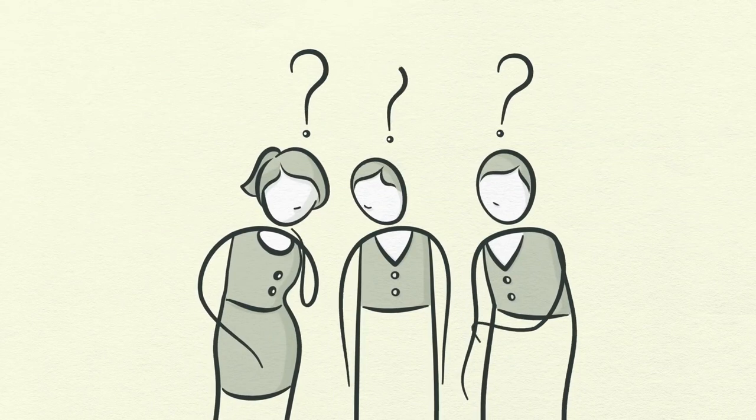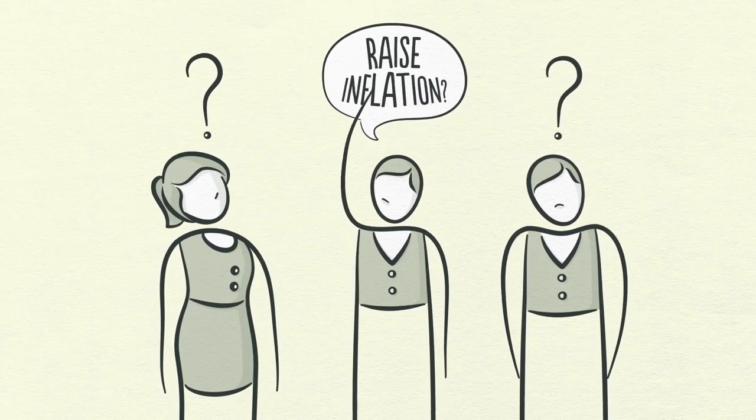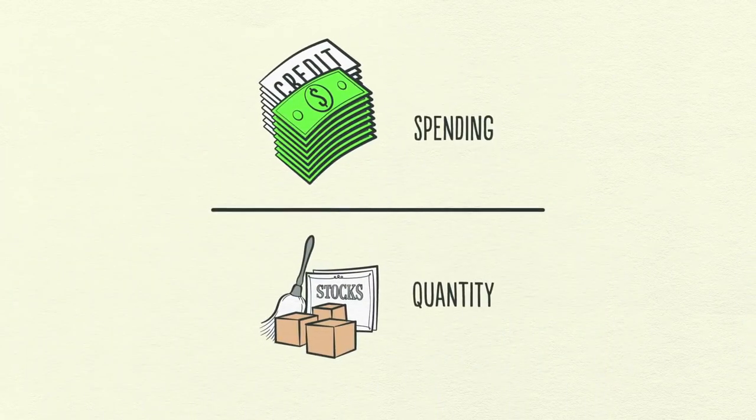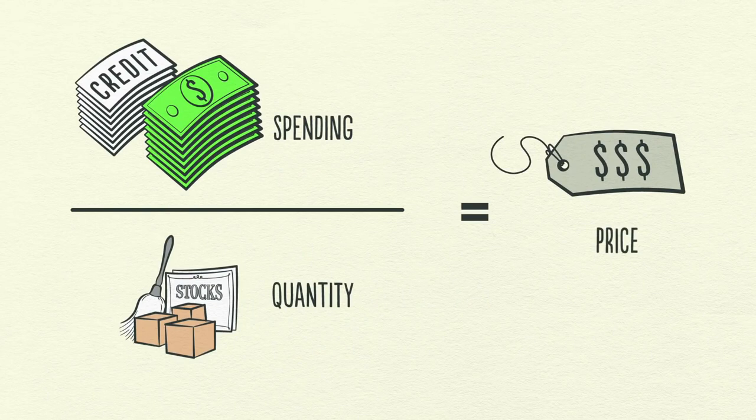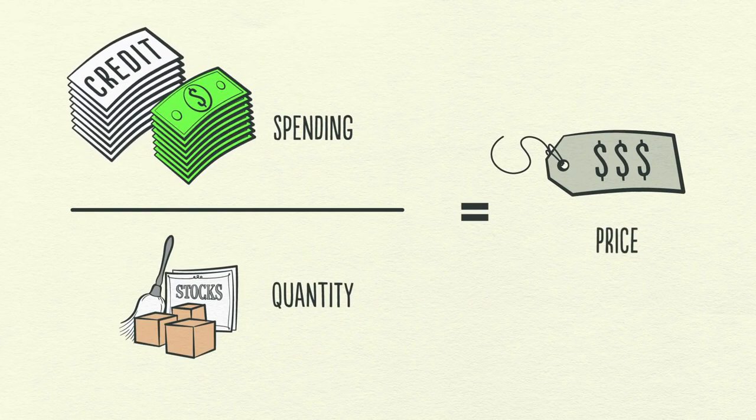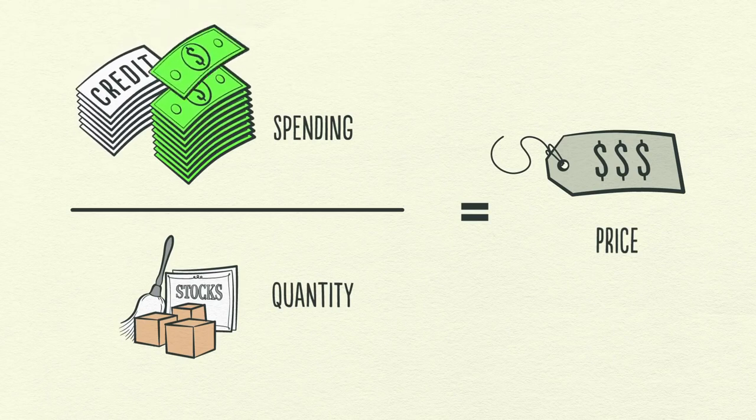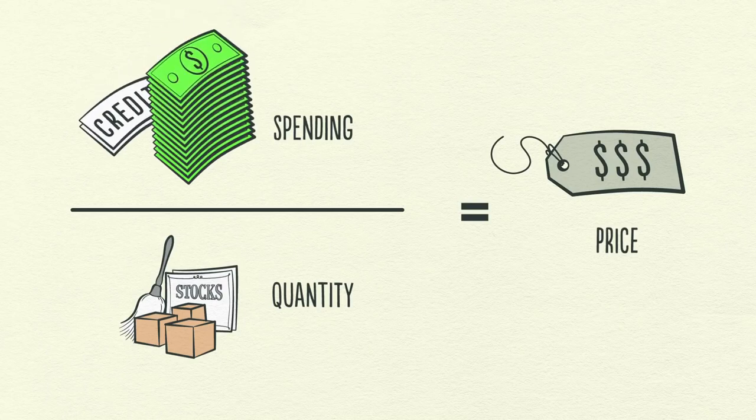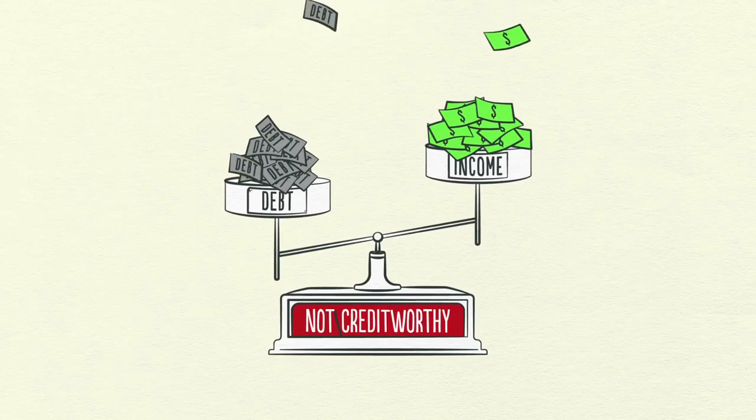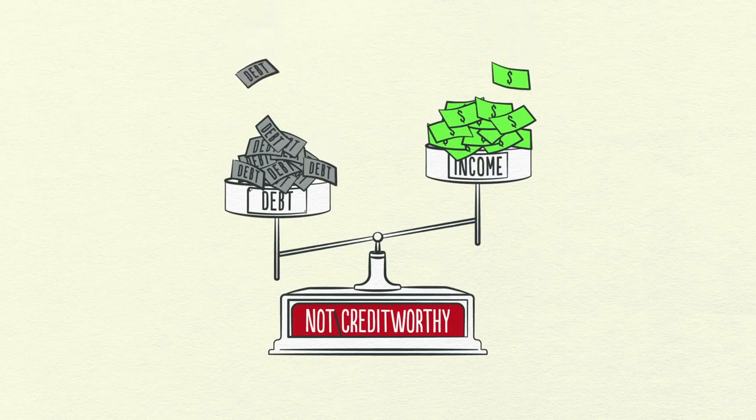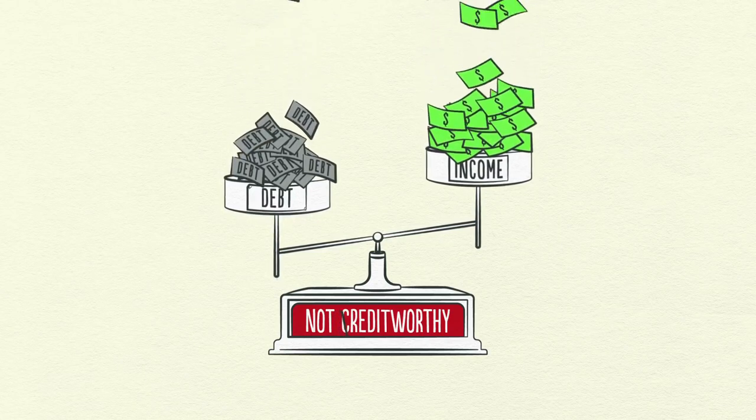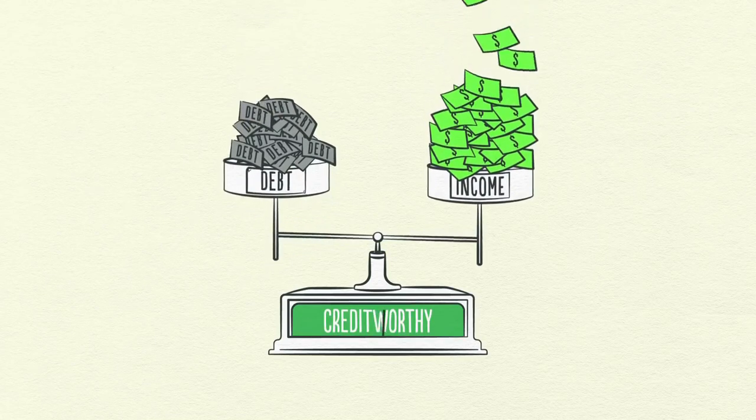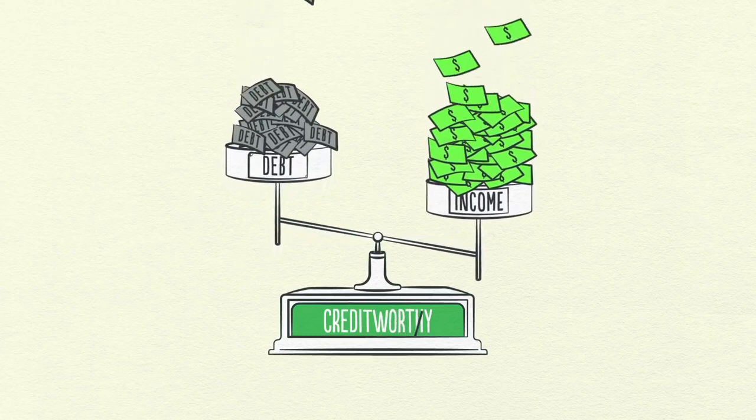People ask if printing money will raise inflation. It won't if it offsets falling credit. Remember, spending is what matters. A dollar of spending paid for with money has the same effect on price as a dollar of spending paid for with credit. By printing money, the central bank can make up for the disappearance of credit with an increase in the amount of money. In order to turn things around, the central bank needs to not only pump up income growth, but get the rate of income growth higher than the rate of interest on the accumulated debt. So what do I mean by that? Basically, income needs to grow faster than debt grows.